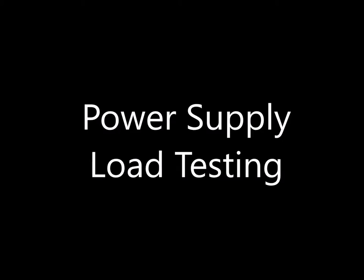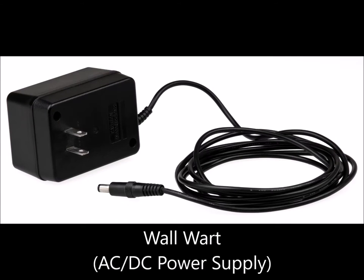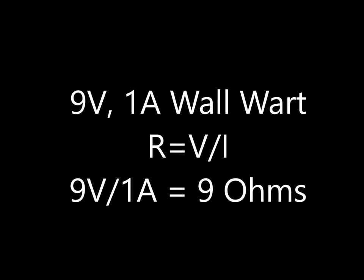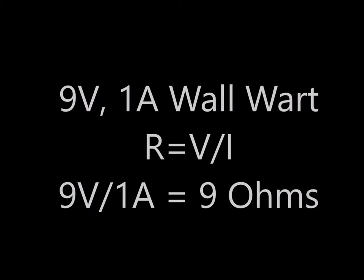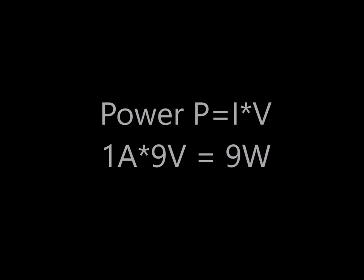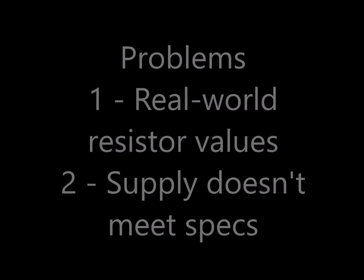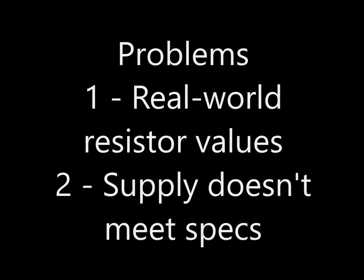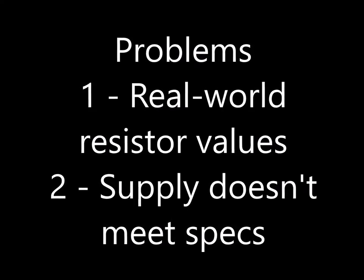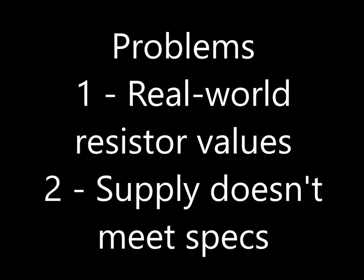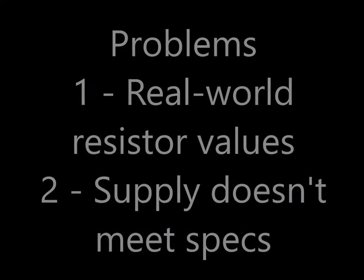What would you do for power supply load testing? Suppose you want to check a typical wall wart. A typical set of values is 9 volts at 1 amp — the resistor you'd need would be 9 ohms. However, the power is where you run into problems, because you also need a 9 watt resistor to handle that amount of current. Real-world resistor values of 9 ohms at 9 watts are just not typical, easy to obtain, or cheap. Plus, that supply you thought you were going to test may not actually work at 9 volts and 1 amp.